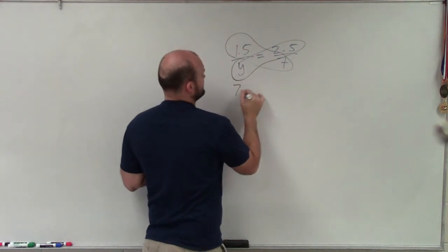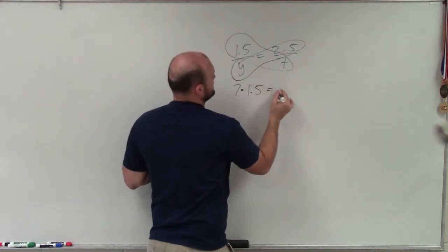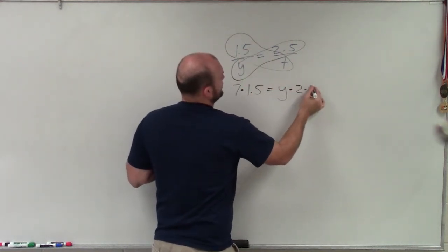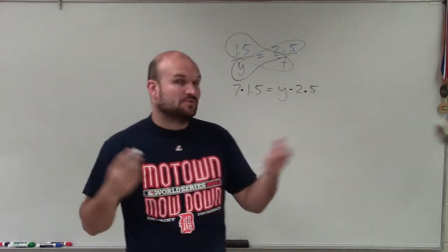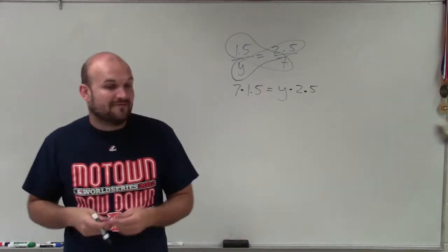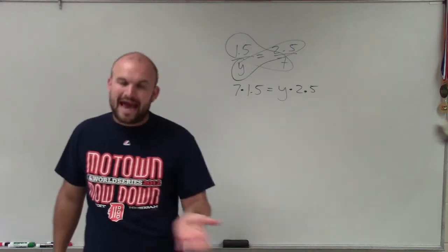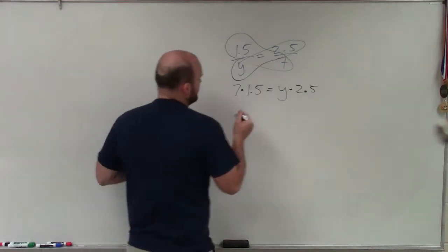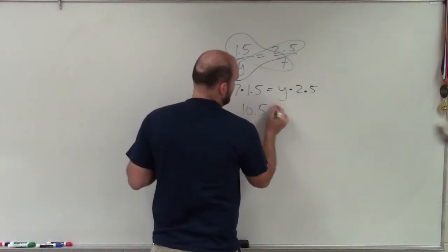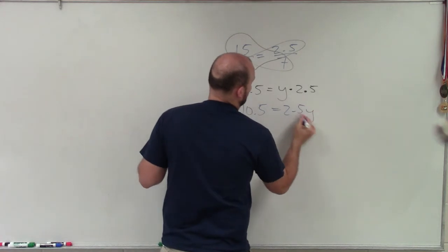So here, I have 7 times 1.5 equals y times 2.5. So 7 times 1.5, well, 7 times 1 is 7. 0.5 is the same thing as one half. One half of 7 is 3.5. So 3.5 plus 7 is 10.5, equals 2.5y.